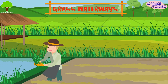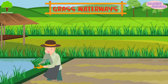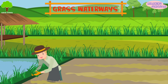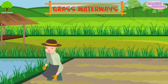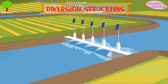Grass waterways: by planting grass in the field, it stabilizes the soil and provides an outlet for drainage. Diversion structures cause water to flow along a desired path, reducing the risk of erosion.